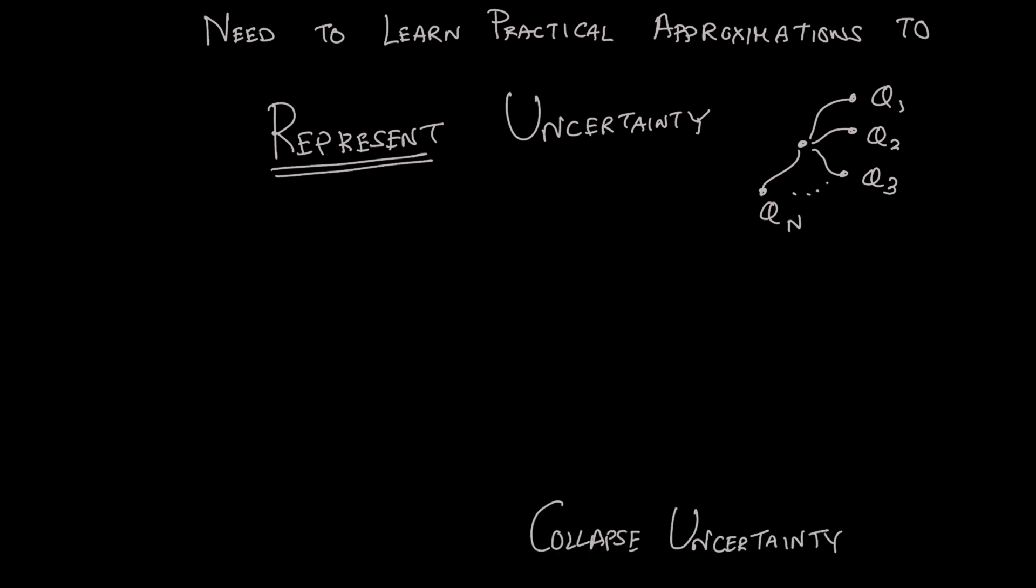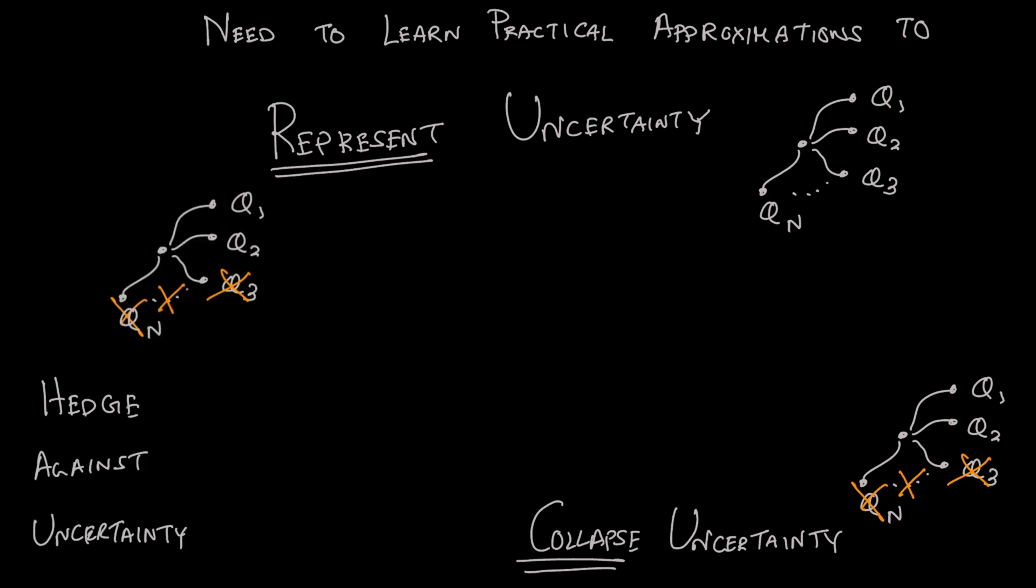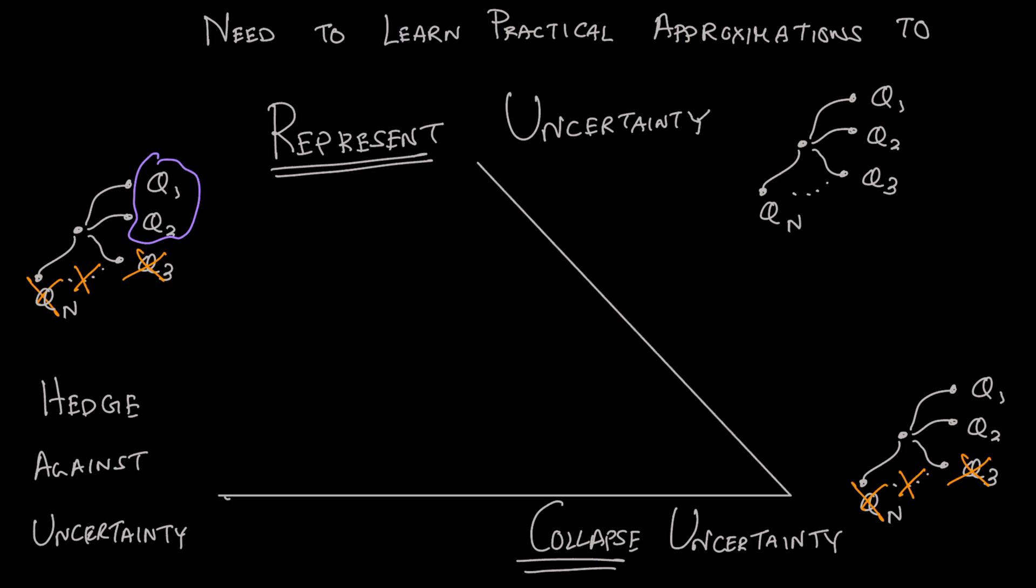And so we need new learning algorithms that can practically represent uncertainty. Gather information to collapse uncertainty when it can and hedge against it when it can't. And it is the search for a unified answer to these questions that continue to drive many of us researchers today.